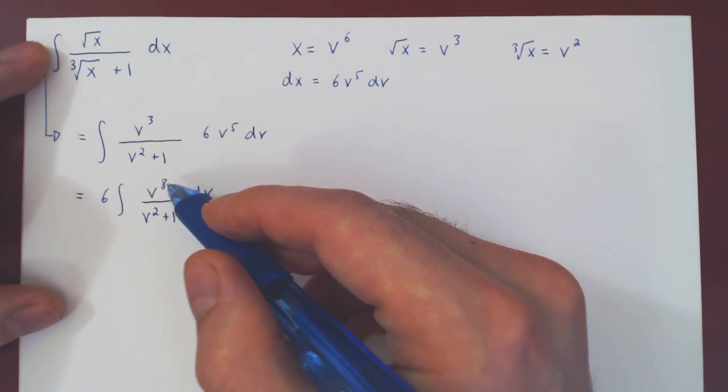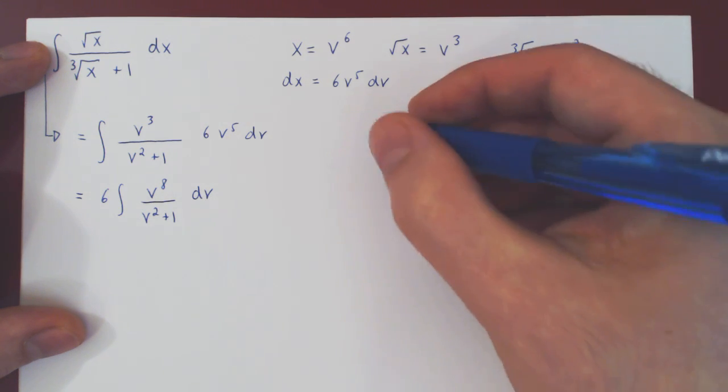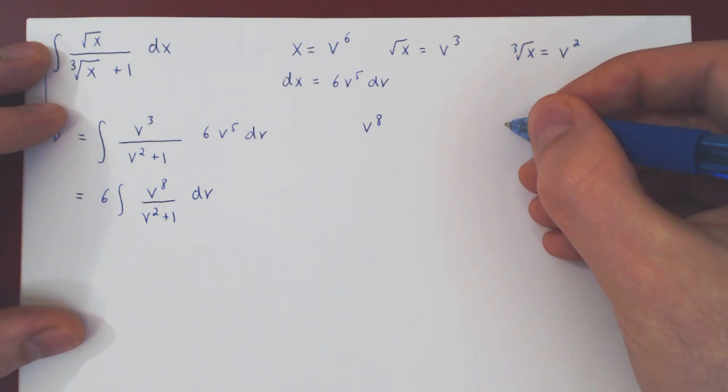Okay, well, first step. 8 is larger than 2, so we must perform long division. Let me do it here. Dividing v to the 8th by v squared plus 1.